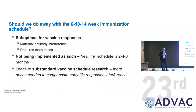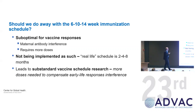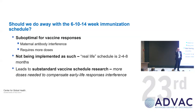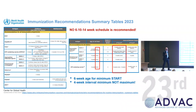Should we do away with the 6-10-14 schedule? My opinion is yes — it provides suboptimal immunological responses, has interference with maternal antibody, requires more doses than we should be using, and is not being implemented as such. In real life, the schedule is really two-to-four, five-to-eight months. It also leads to substandard vaccine schedule research. A pertussis study being done using 6-10-14 weeks is challenging that vaccine too early with shorter intervals, so immunogenicity will not be the same. Many African countries and Southeast Asia are not changing because they are waiting for WHO to tell them to, but WHO's immunization tables in no way mandate the 6-10-14 schedule.